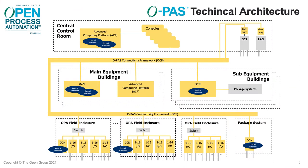Here's the OPAS architecture applied to an example plant. Some equipment is housed in a central control room, other in remote enclosures, and some on a modular package system, such as a compressor skid.